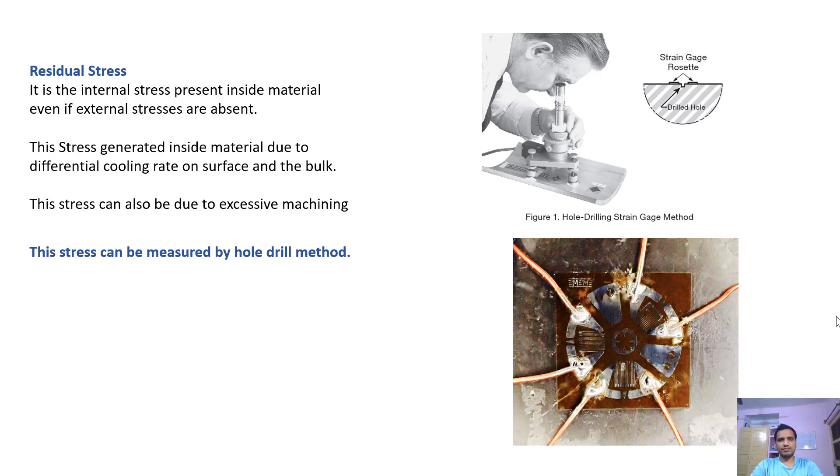This stress can also be due to excessive machining. It may also occur during forging process due to difference of temperature. What difference of temperature leads to is difference of dilation, basically contraction or expansion, which ultimately leads to presence of residual stresses. Residual stresses vary from the surface to the bulk.